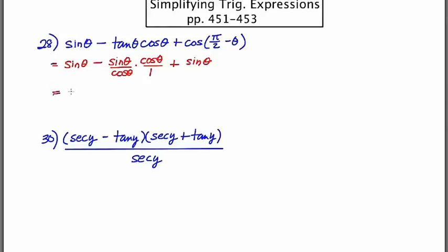So let's simplify here. We have sine theta in the beginning. Then, the cosines cancel out, so we're left with sine theta here. Plus another sine theta at the end.